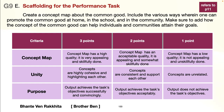For the purpose: three points — the output achieves the task's objective successfully and convincingly. Two points — the output achieves the task's objectives acceptably. And for only one point — the output does not achieve the task's objectives, but at least there's something there.